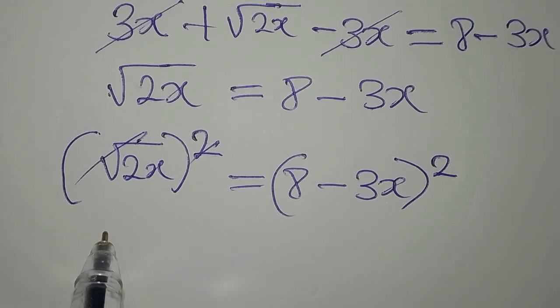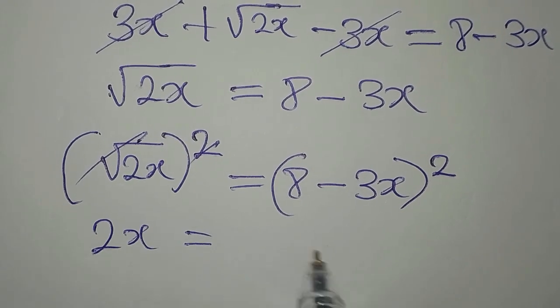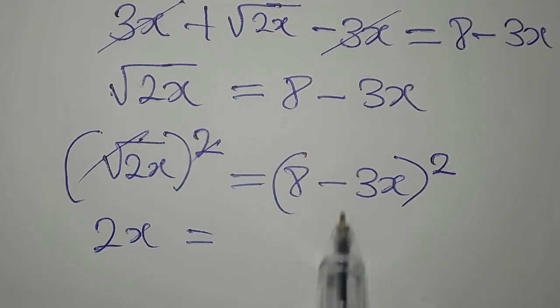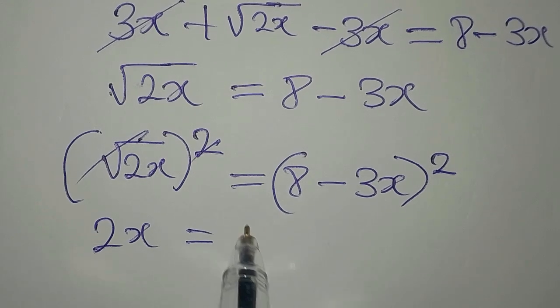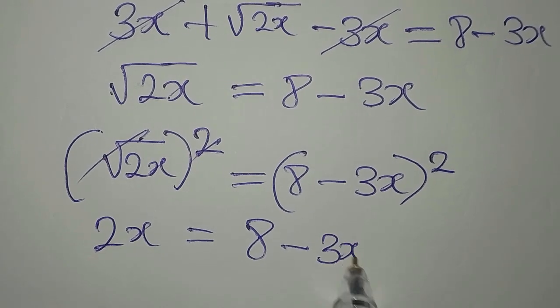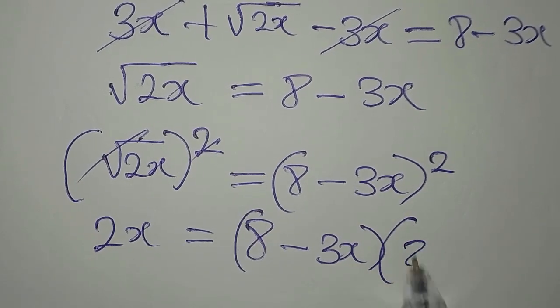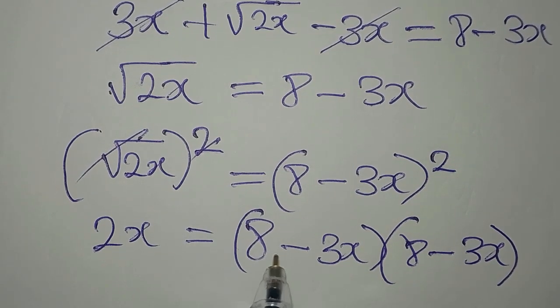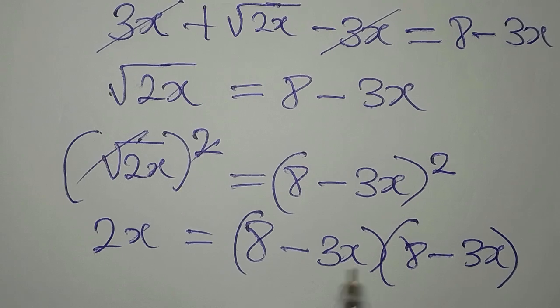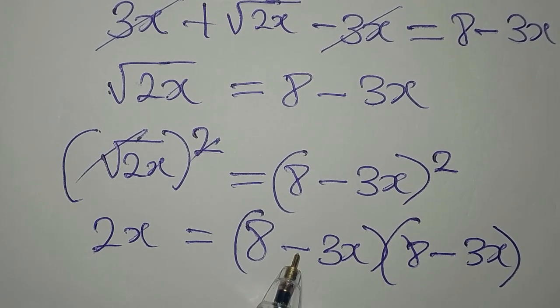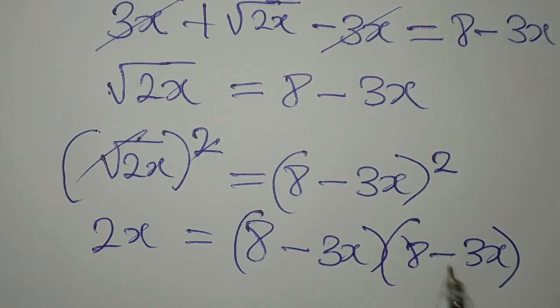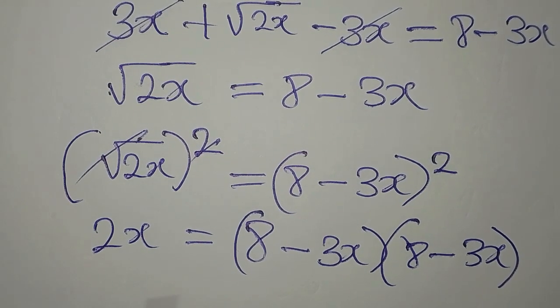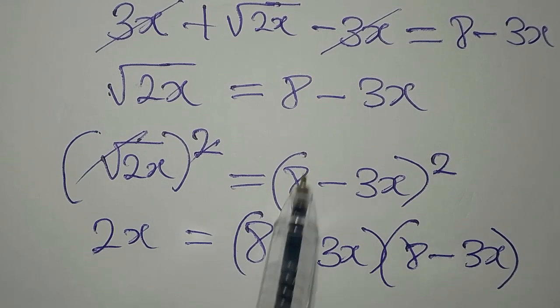This will take the root away, so we have 2x equal to what we have here in two places: 8 minus 3x into 8 minus 3x. Some students will change the sign in between, making this positive and the next one negative, but that is wrong.